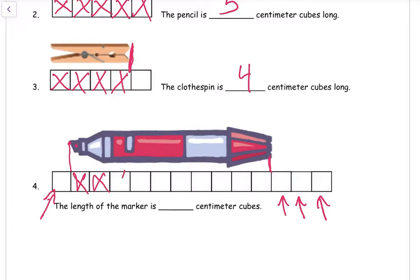We're going to count one, two, three, four, five, six, seven, eight, nine, ten. The length of the marker is ten centimeter cubes.